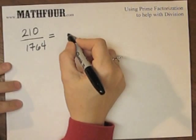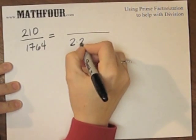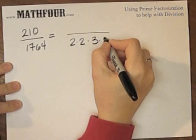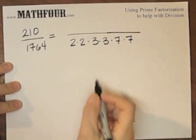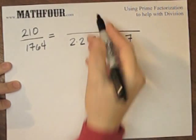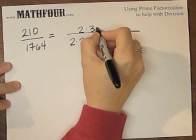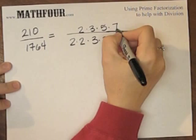So I can put that on the bottom: 2 times 2 times 3 times 3 times 7 times 7. And 210 we've done in a previous video is 2 times 3 times 5 times 7.